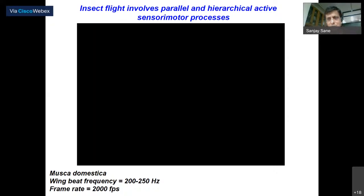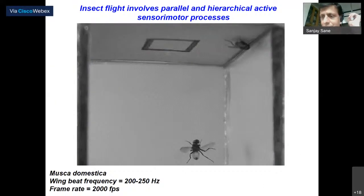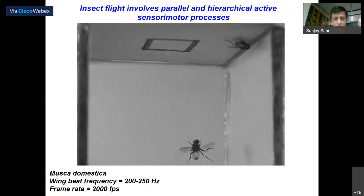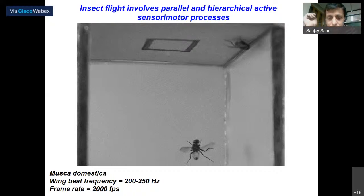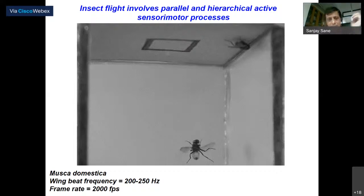Everything that you just saw happened in the matter of maybe about 20 wing beats, which is less than 100 milliseconds. For comparison, our eye blink is about 200 milliseconds — that's the fastest thing we do — and it's sluggish compared to what a fly is able to accomplish in half that time frame. And yet in this small time frame, the fly is doing many things: it is preparing to land, it is landing upside down — which is already a challenge.